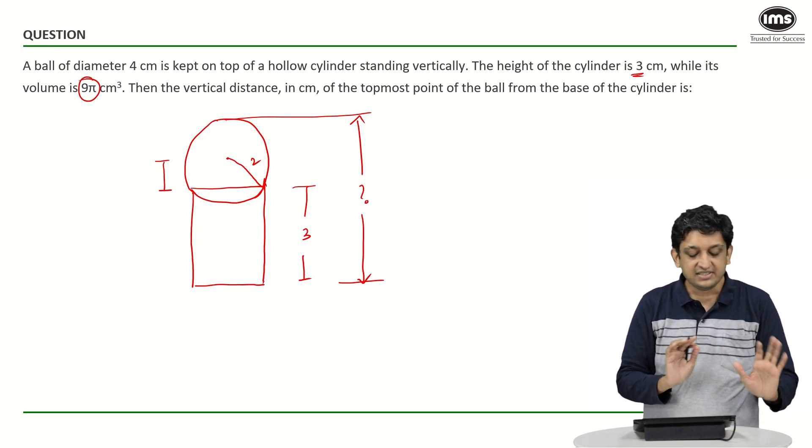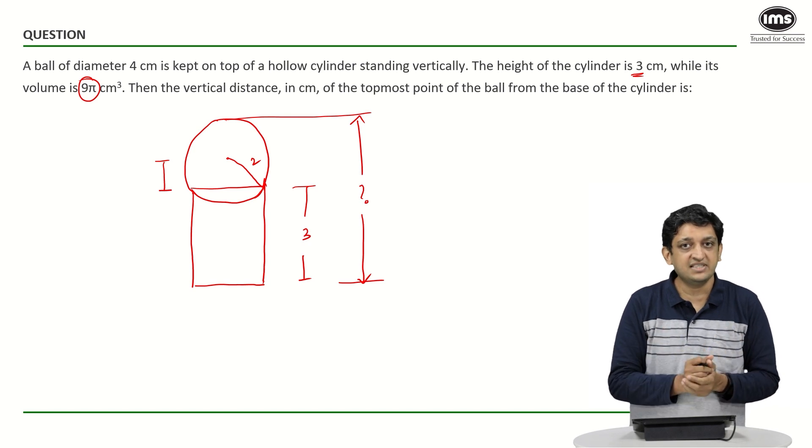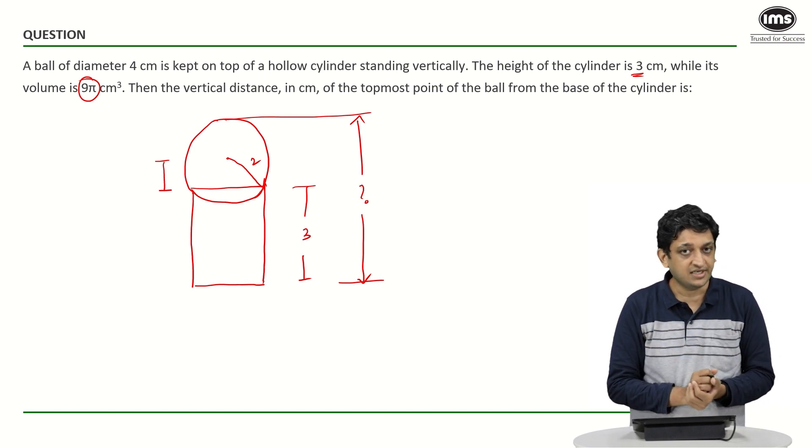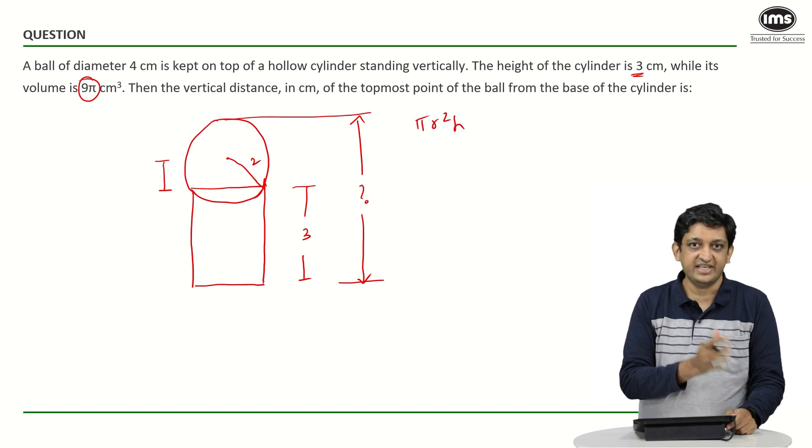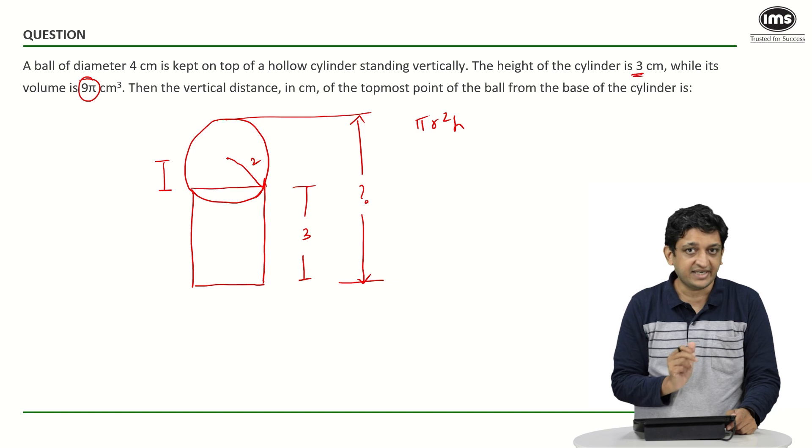So what we can do here is we can just try to figure out what is the volume of the cylinder and how is it related to the radius of the cylinder. Let us say the volume of the cylinder is given by this formula pi r square h area of base into height for any prism that exists.